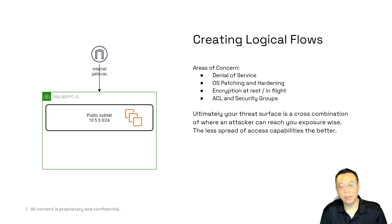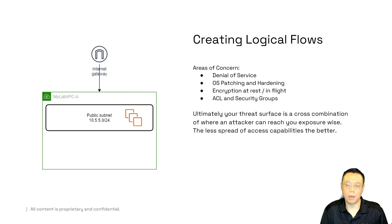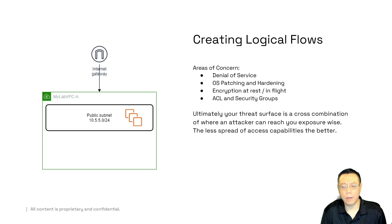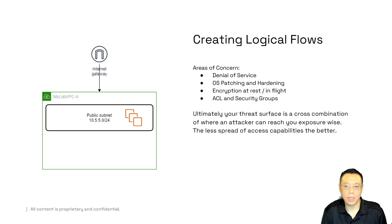Now that we understand regulatory frameworks and policies, we want to start thinking about logical flows. Before we do any form of threat analysis and threat modeling creation, we just create a diagram of what we're making — the architecture itself. I've created a single EC2 instance in a public subnet, single VPC with an internet gateway. We already have some areas of concern: a denial of service. Although we have AWS Shield, we don't have AWS Shield Advanced, which actually acts as a 24x7 monitoring service for any kind of denial of service attack.